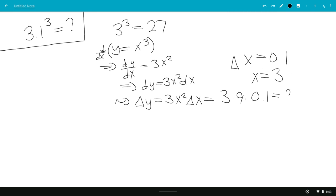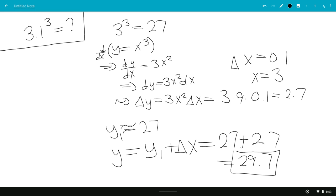This is 27 times 0.1, so that's 2.7. So we know that y initially was approximately equal to 27, so now this same y plus Δx which is 27 plus 2.7, which is 29.7. That's the approximation.